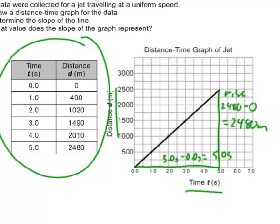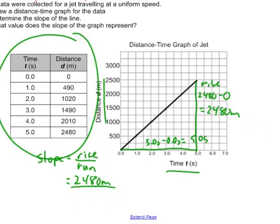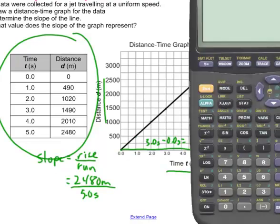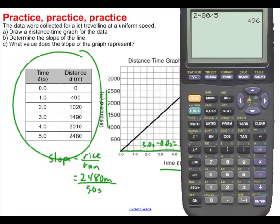Okay well I can now go ahead and calculate slope because if you remember slope is the rise divided by the run. So in our case the rise was 2480 meters, the run was 5.0 seconds. And if we bust out the calculator and do a little bit of math, we see that 2480 divided by 5 is 496.